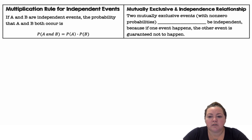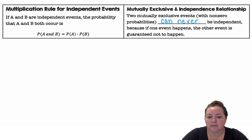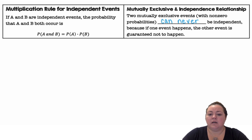Mutually exclusive and independence relationship: two mutually exclusive events with non-zero probabilities can never be independent, because if one event happens, the other event is guaranteed not to happen.